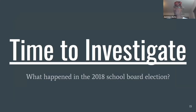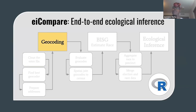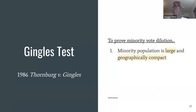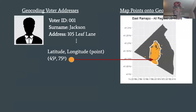Using the pipeline of the EICompare package, we will assess what happened in the East Ramapo School District election. After receiving the voter file, the first step is to ensure that voter addresses are geocoded — meaning we find out where voters live using points on a map. Geocoding is a brand new part of the package that didn't exist before; users previously had to do this step on their own and validate that the geocoded addresses were correct. Remember, one of the first criteria of the Gingles test is to prove that the minority group is large and geographically compact.